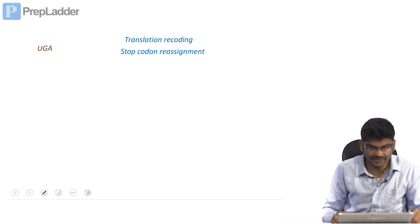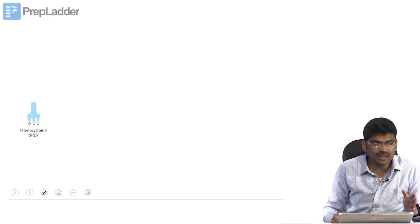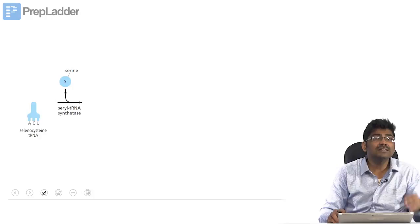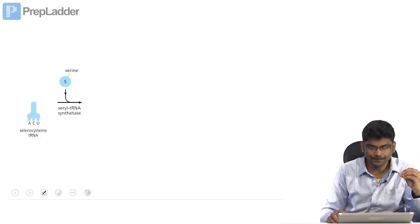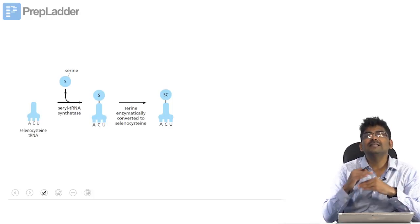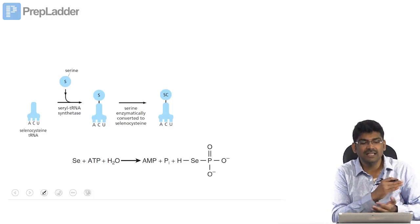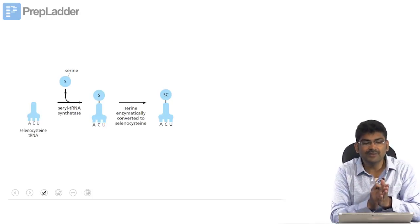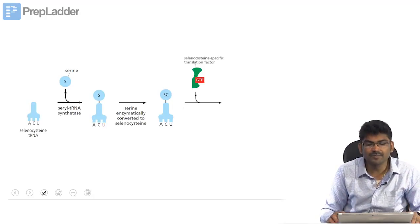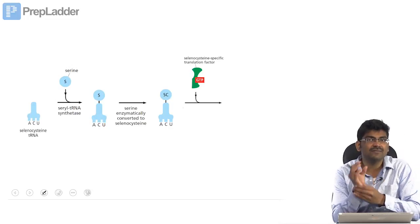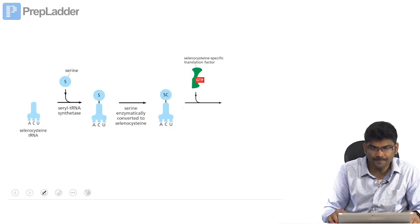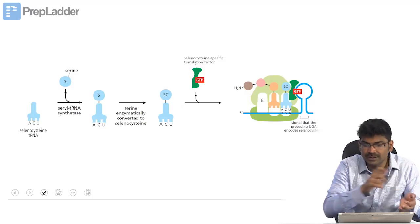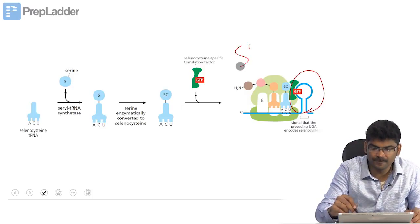Let us see how this is happening. I told you selenocysteine has its specific tRNA. This is the selenocysteine tRNA. Initially, this tRNA will carry serine. Then this serine will be enzymatically converted to selenocysteine. So now, ultimately the tRNA carries selenocysteine. There is again a specific elongation factor for selenocysteine. Who tells that you have to incorporate selenocysteine? There is a stem loop structure.